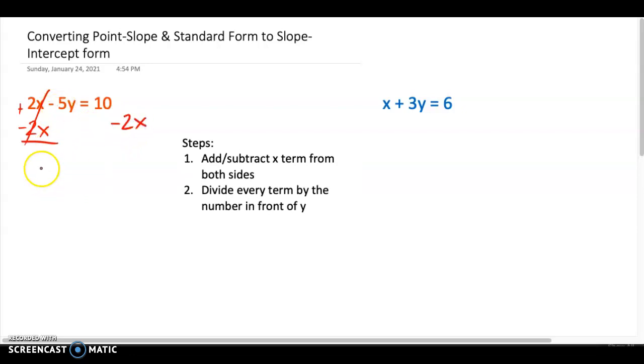So what I have left on this side is negative 5y is equal to, and I'm going to start writing it in my slope-intercept form. So I'm going to put the term with x first, minus 2x plus 10. Can't add those together. One has an x, one does not. So that's step one.